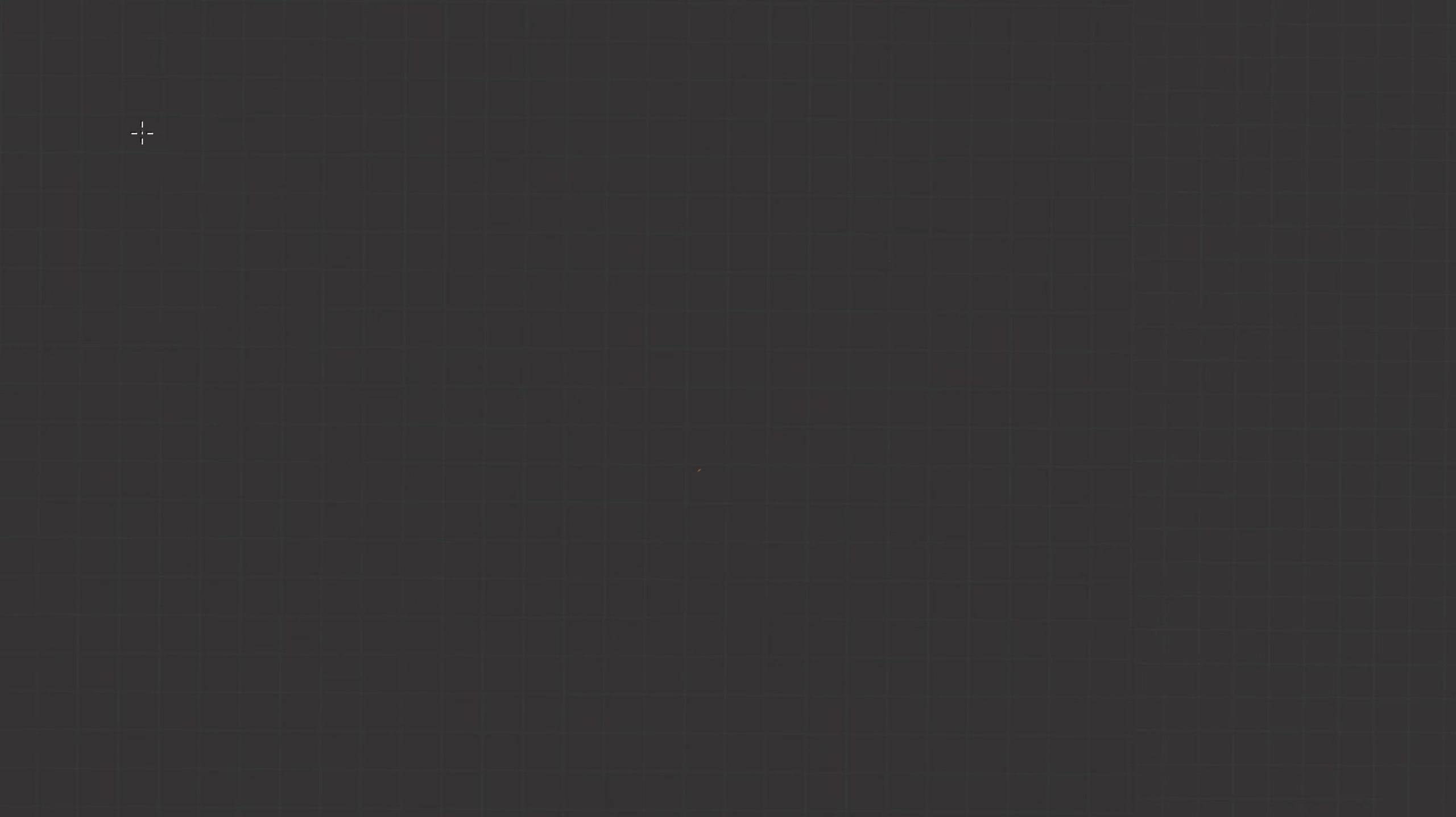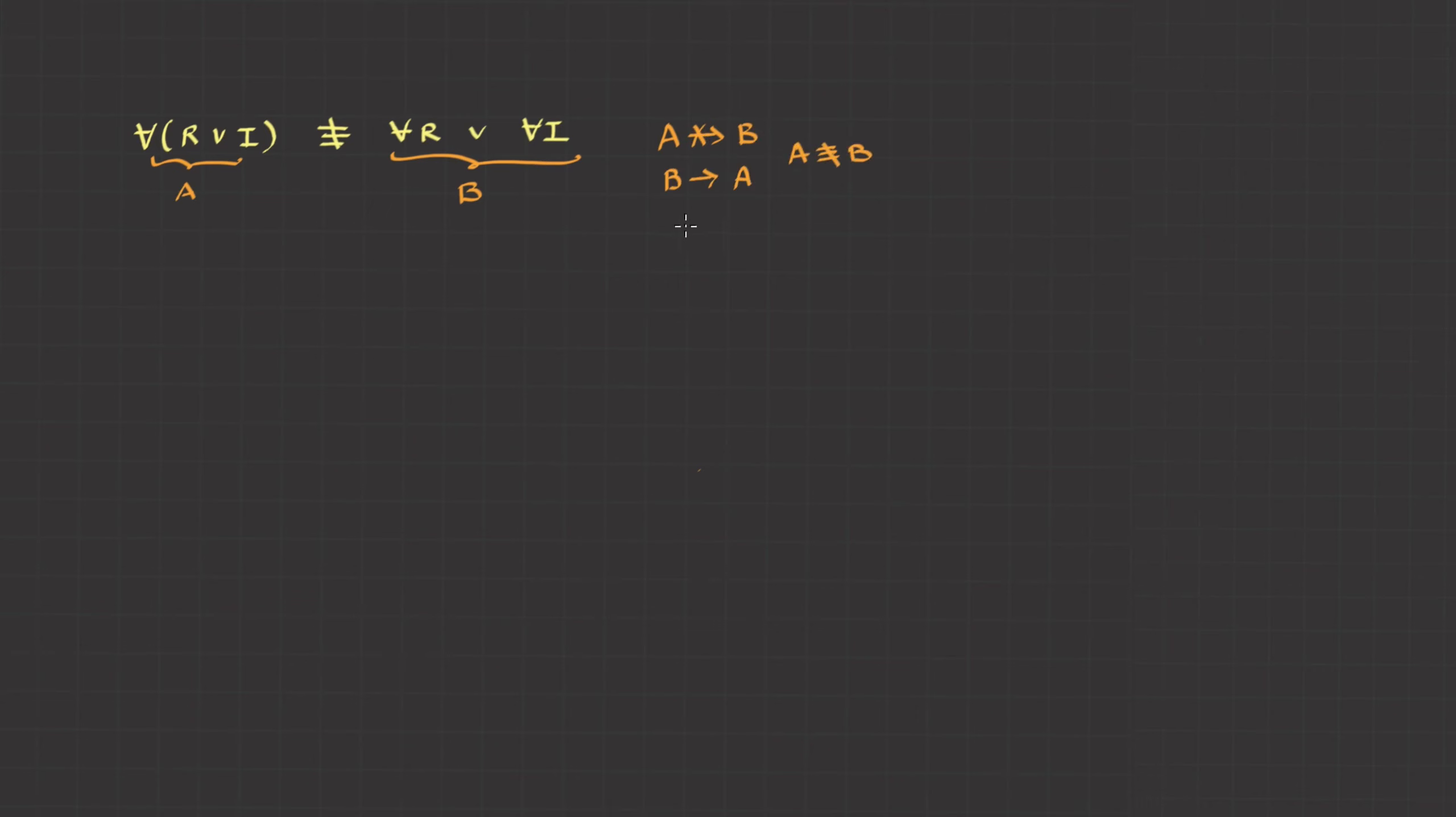We have seen in the last video that for all R or I is not equivalent to for all R or for all I. This is because if we take this as A and this as B, A does not imply B, but B implies A. Therefore it is not equivalent. We could write this as for all R or for all I logically implies for all R or I. So this is a valid statement but not equivalent.